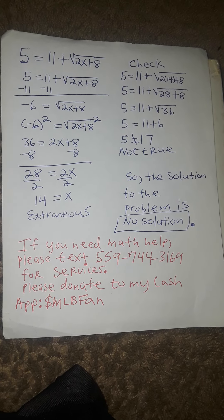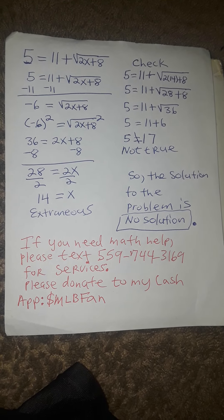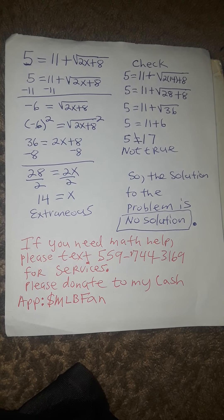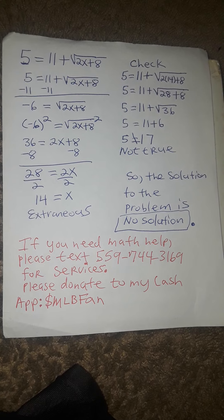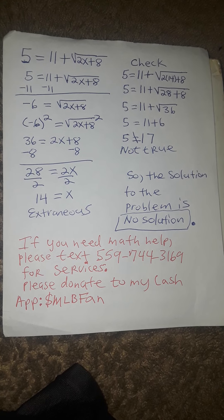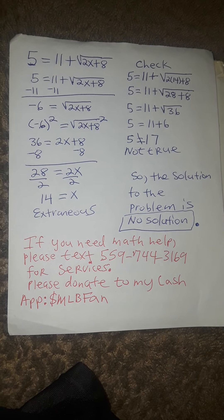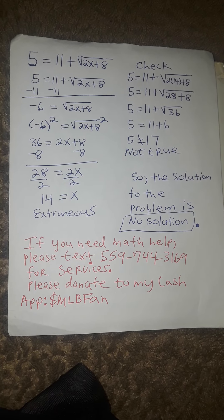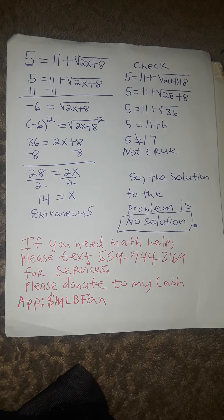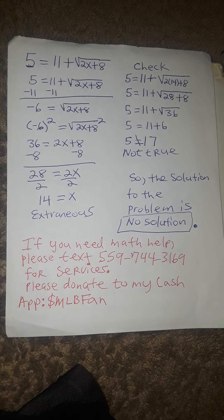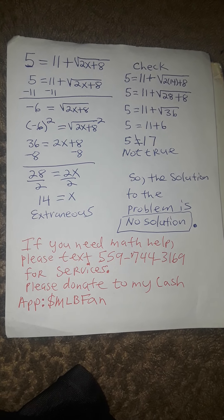Now we have to figure out how to undo a square root. In order to do this we must square both sides by raising both sides of the equation to the power of 2. So negative 6 squared is equal to the square root of 2x plus 8 squared. And that gives us 36 is equal to 2x plus 8.